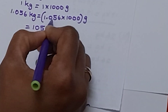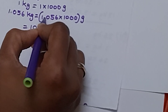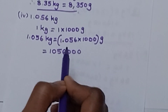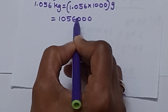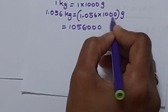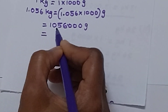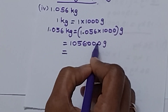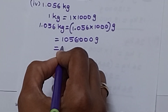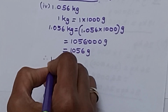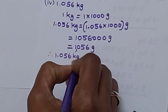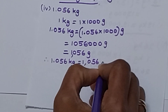Now we think about the decimal point. After the decimal in 1.056, there are 3 digits. So we place the decimal after 3 digits from the right — positions 1, 2, 3. After 3 digits, we put the decimal. After the decimal, there are no digits other than zeros, so we ignore it. We just write 1, 0, 5, 6 — that is 1,056 grams. Therefore, 1.056 kilograms equals to 1,056 grams.